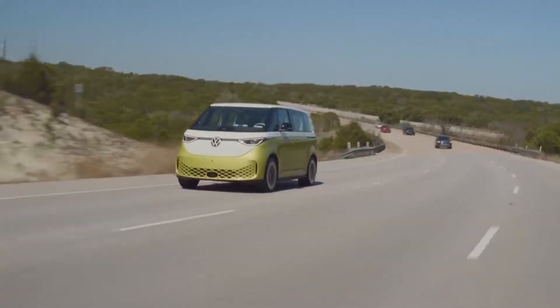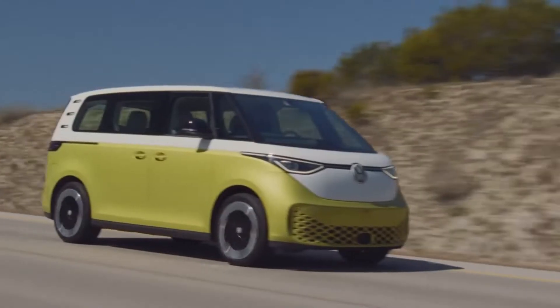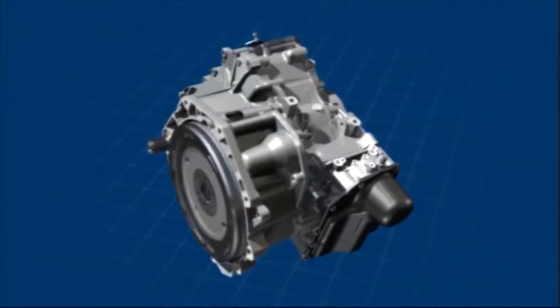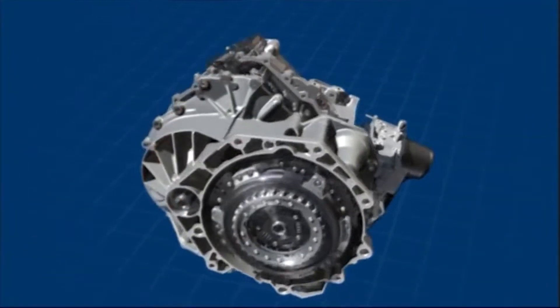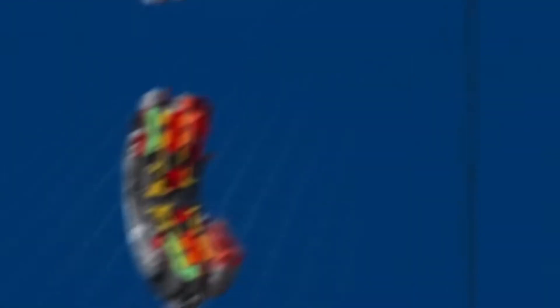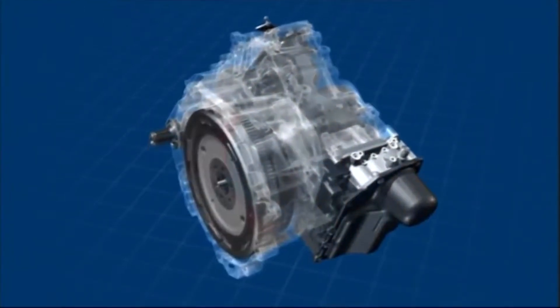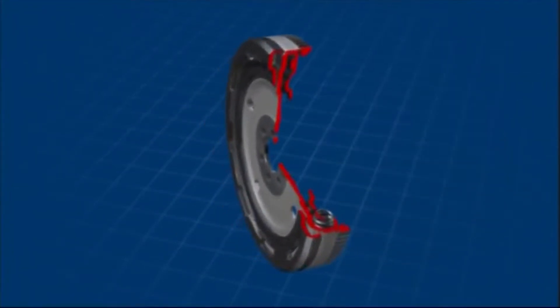Direct Shift Gearbox. Volkswagen pioneered the Direct Shift Gearbox, also known as DSG. It is a dual-clutch, multiple-shaft, automatic gearbox with electronic control. The system consists of two engine-driven clutch packs, one with a larger diameter and the other with a smaller diameter.